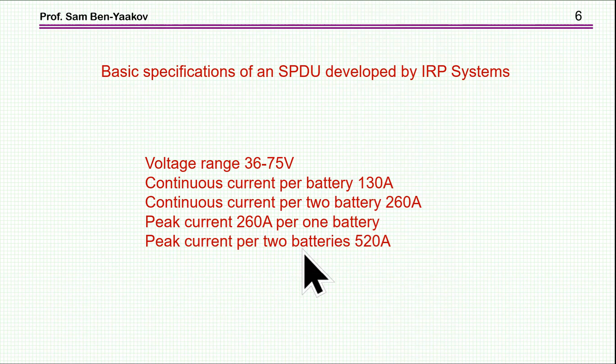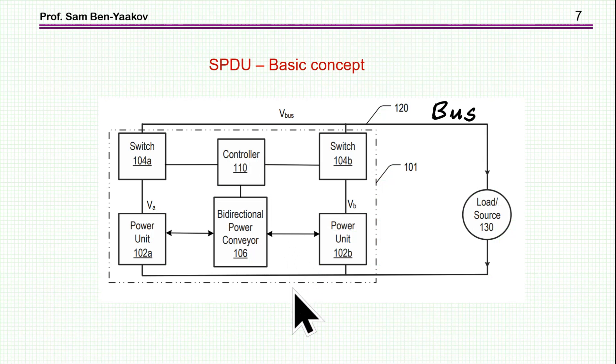And then peak current for a short time of 260 amps per one battery or double of that for two batteries. So these are the specifications.